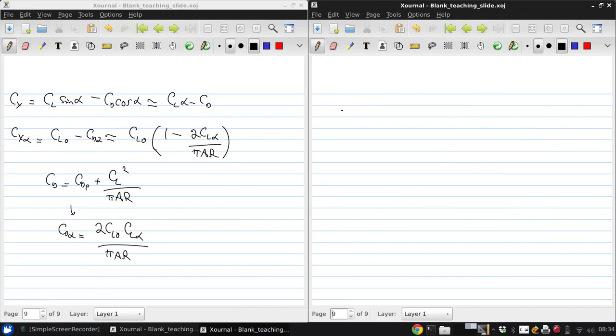And for the remaining X and Z body axis plane force coefficients, Cxq is approximately 0, Cz is negative Cl cosα minus Cd sinα which for small angles of attack is minus Cl minus Cdα.